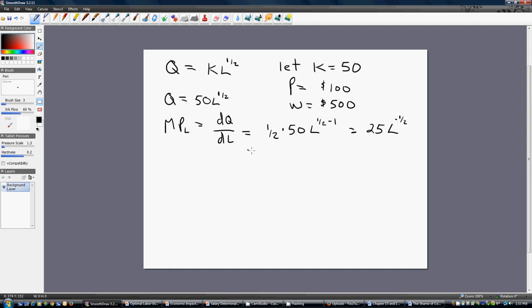And I'm just going to bring that L term down in the denominator. So, that is our marginal product of labor. And now we're just going to multiply this marginal product of labor by the price. And then set it equal to the wage. Let me squeeze this in over here.